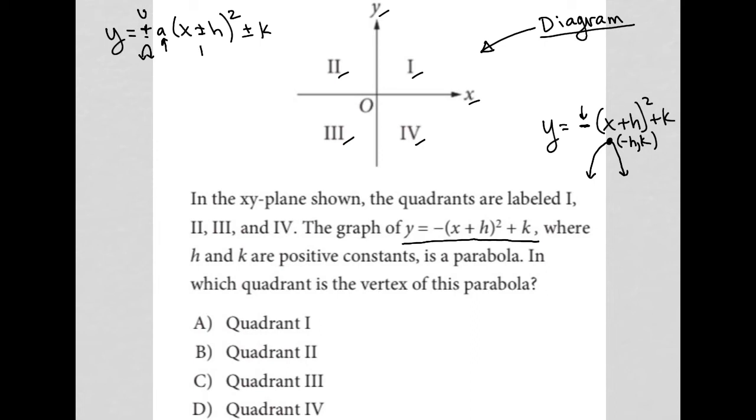A positive h means you shift to the left h units. Negative h means you shift to the right h units. That's the insider's lie idea, which hopefully sounds familiar from school.